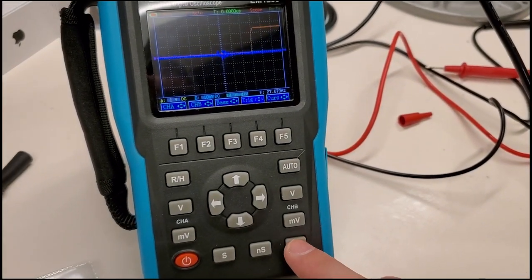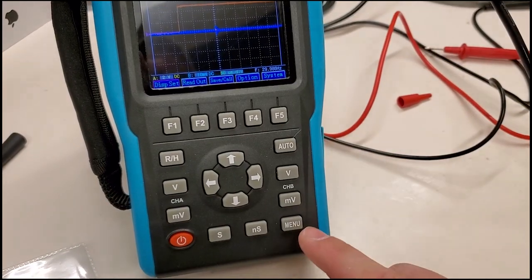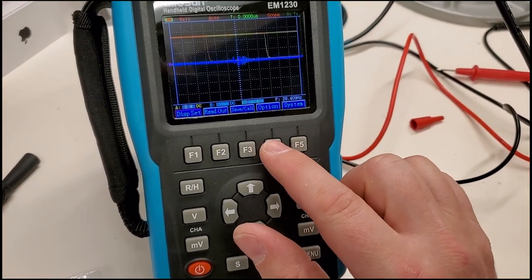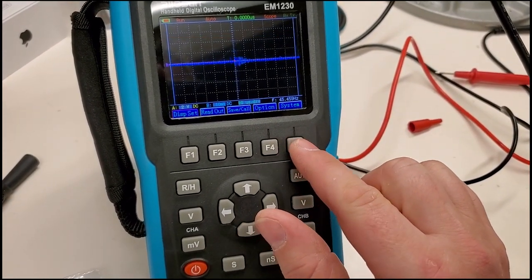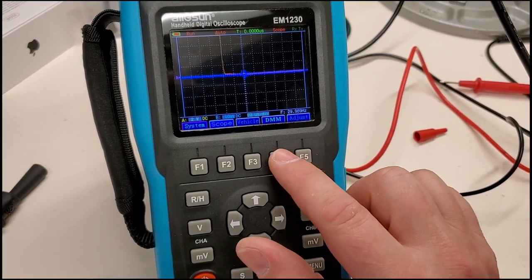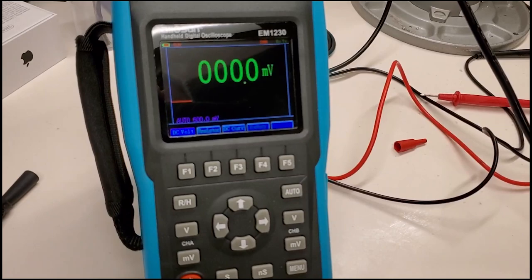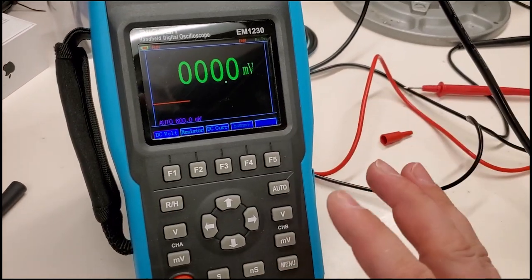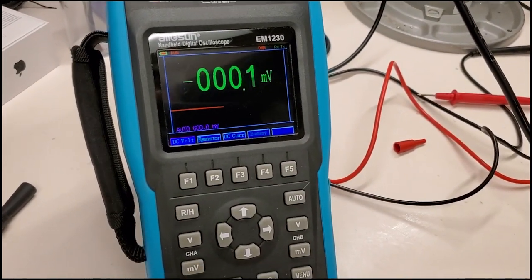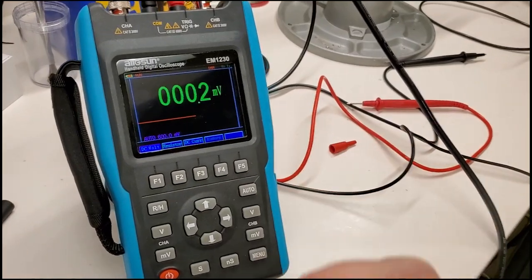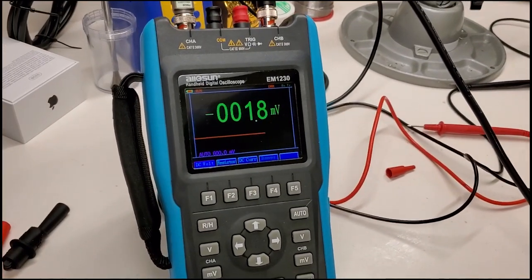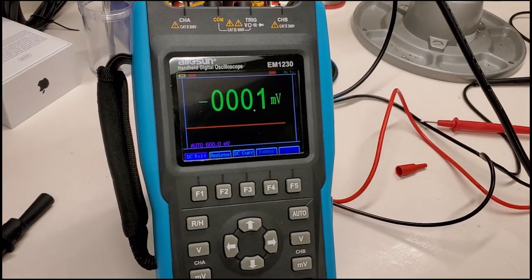So in order to put this in a multimeter mode, you put it on menu down here and then I have to come up here to system and DMM. And now I'm in multimeter mode. The fact that I have to press multiple buttons to get it into a multimeter mode, it really chaps my butt. But anyway, you get what you pay for.